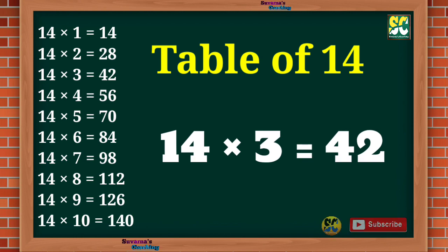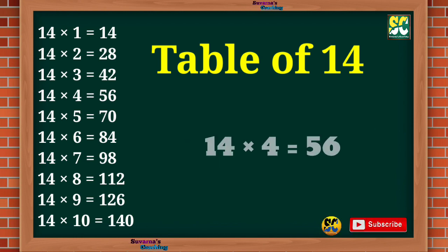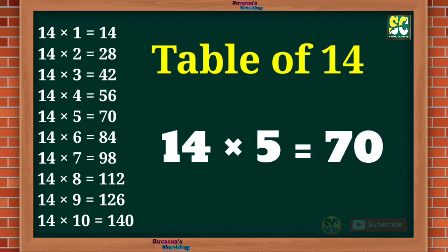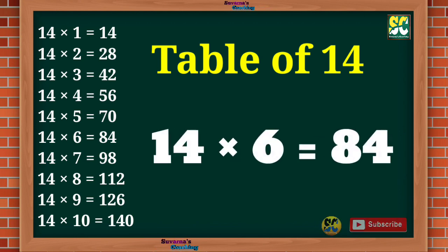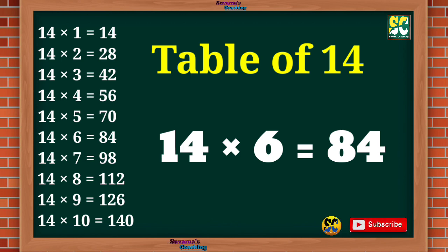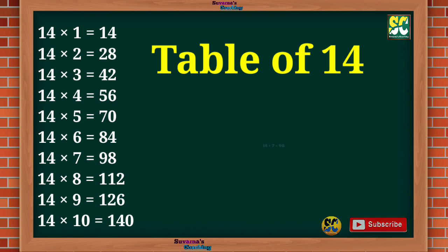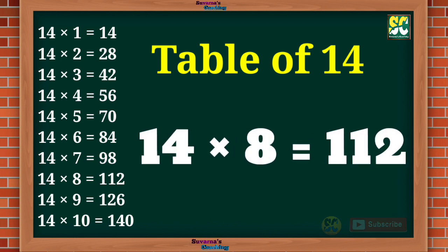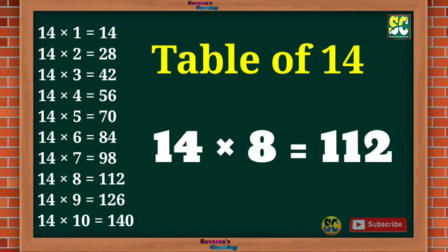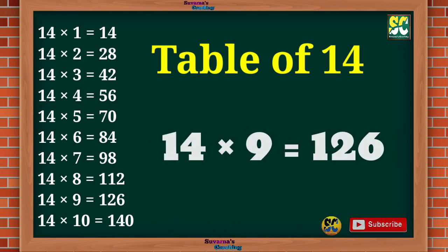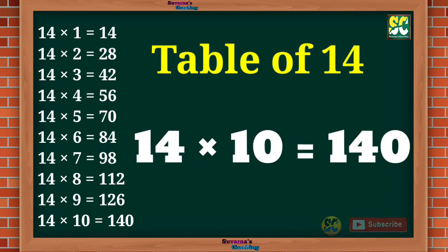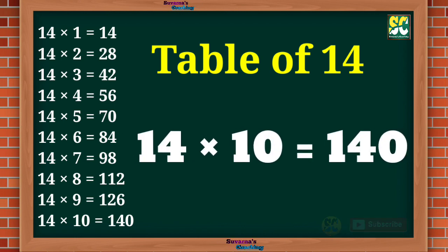Table of 14. 14 1s are 14, 14 2s are 28, 14 3s are 42, 14 4s are 56, 14 5s are 70, 14 6s are 84, 14 7s are 98, 14 8s are 112, 14 9s are 126, 14 10s are 140.